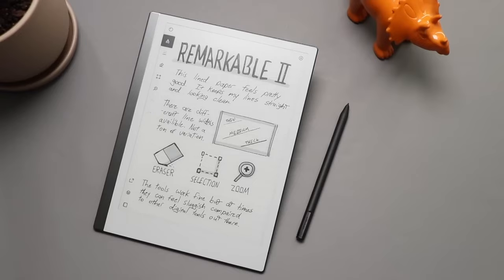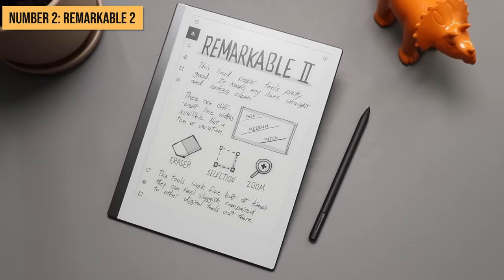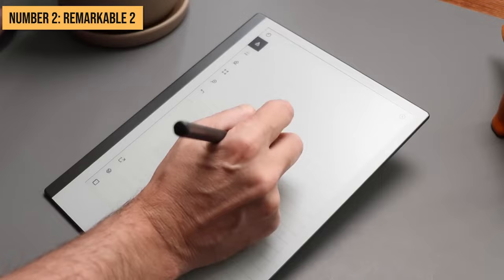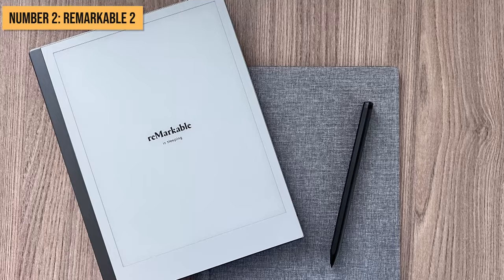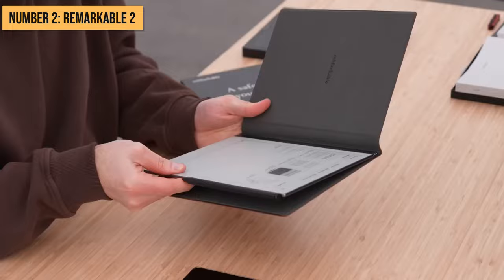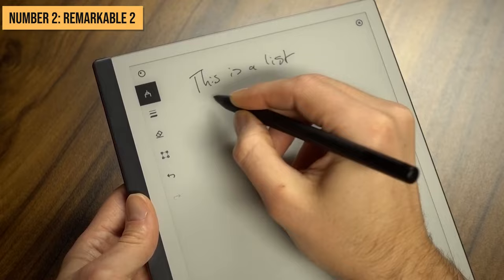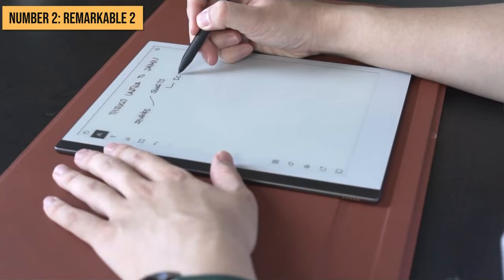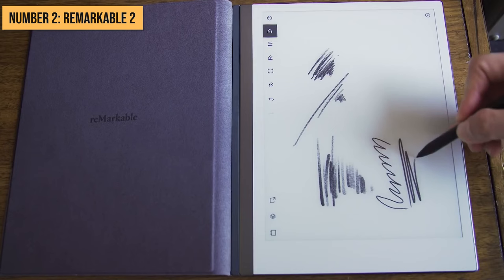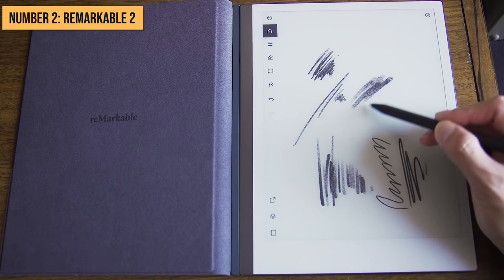If you want the closest electronic replication of writing on paper, with lag-free responsiveness, paper-like friction, and a suite of organizational features tailored for documents and e-reading, the Remarkable 2 tablet reigns supreme. Let's dive deeper into why this 10.3-inch lightweight slate running a custom Linux interface is rated as one of the best paper tablets around by tech enthusiasts worldwide. For starters, the canvas display technology and ultra-low latency deliver imperceptible 21-millisecond input lag for the most natural, precise writing and drawing experience, bar none. The Remarkable nails the feel of pen on paper.